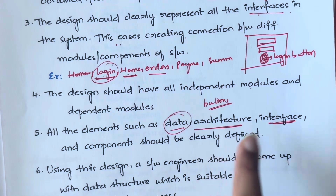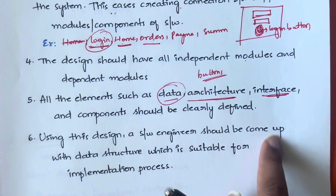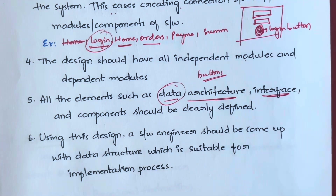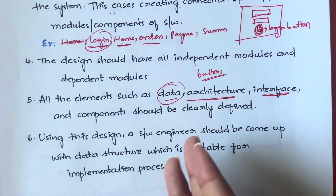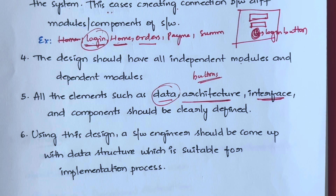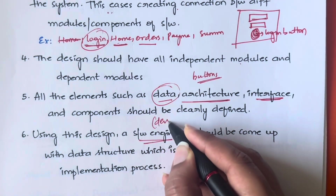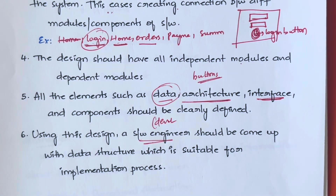And using this design, a software engineer should be able to come up with a data structure that is suitable for the implementation process. By looking at the design, the software engineer — meaning the developers or whoever is involved in the software — should be able to figure out what data structure is needed to implement a given functionality.